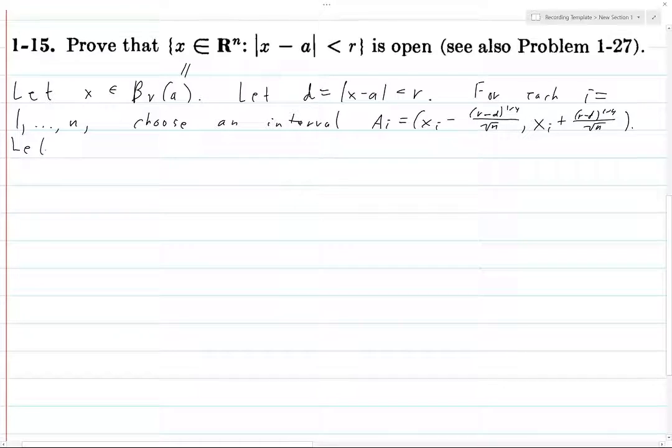Then let A be the open rectangle A_1 × ... × A_n. Then A is open. For all y in A, we know that the distance between x and y is the sum from i=1 to n of (x_i - y_i)².